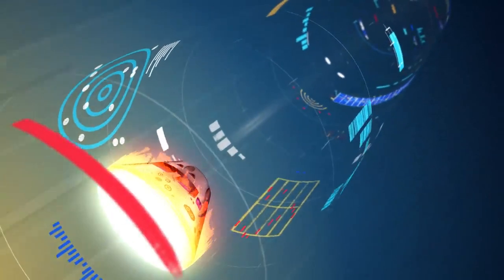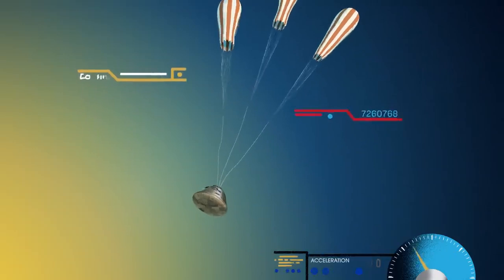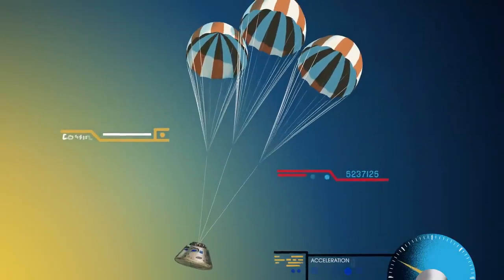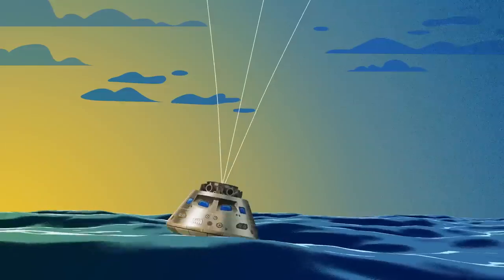With the Orion now at just 300 miles per hour, a series of parachutes uniquely tested and produced for this moment deploy, decelerating the craft to just 20 miles per hour for splashdown.